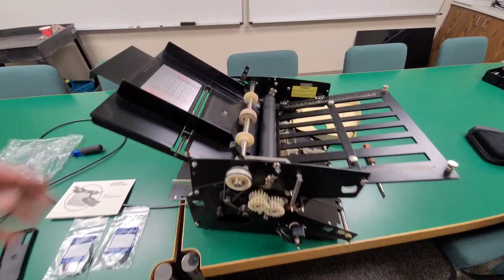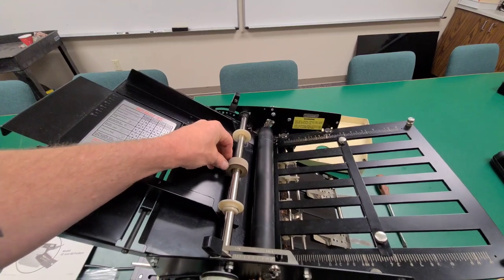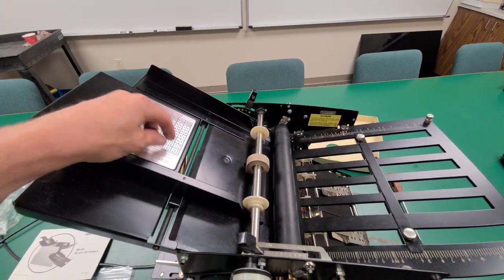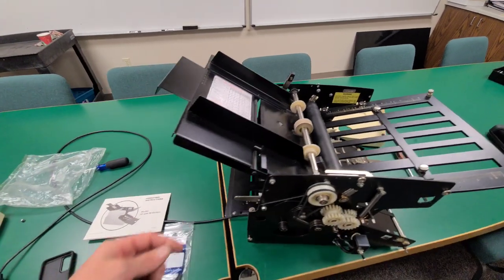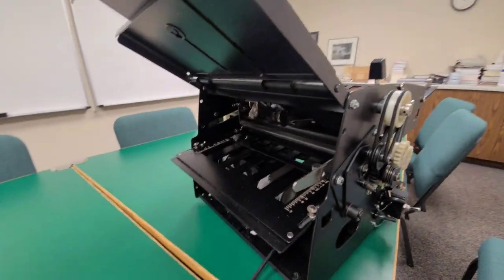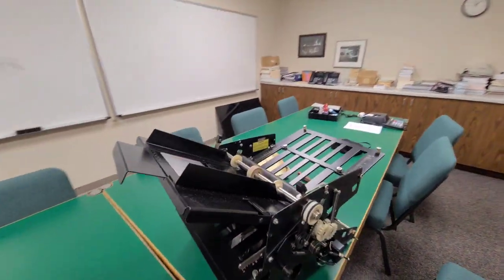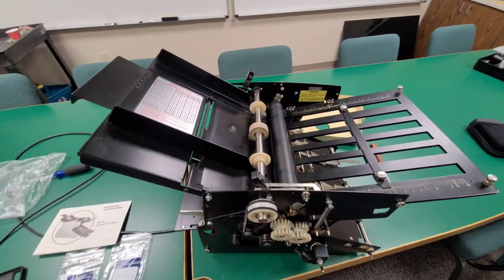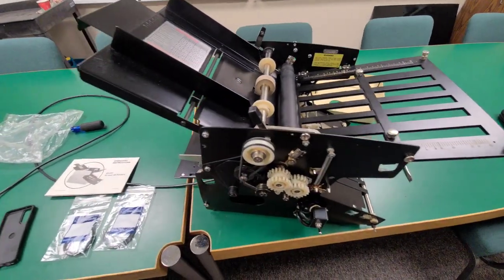Well our problem was the paper feeder wasn't turning so I knew there had to be a belt somewhere. Also we had a flat spot on the bottom of our roller that's underneath there which all you got to do is turn it to find another good spot and then keep it there.